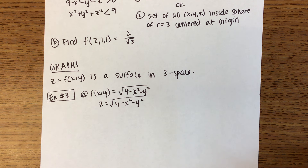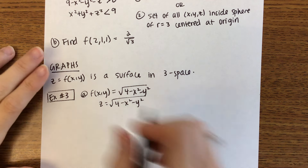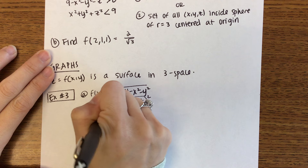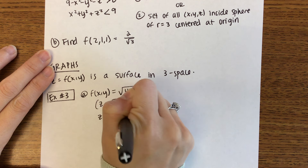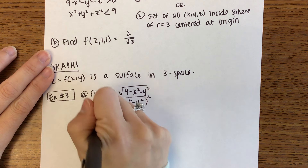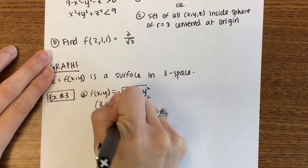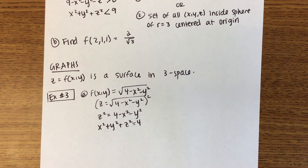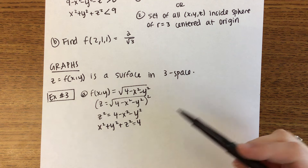My suggestion is to first replace f of x, y by z because it's easier to work with. We might have to do a little manipulation. So we're going to square everything: z squared equals 4 minus x squared minus y squared, which gives us x squared plus y squared plus z squared equals 4. That's a sphere centered at the origin with a radius of 2.